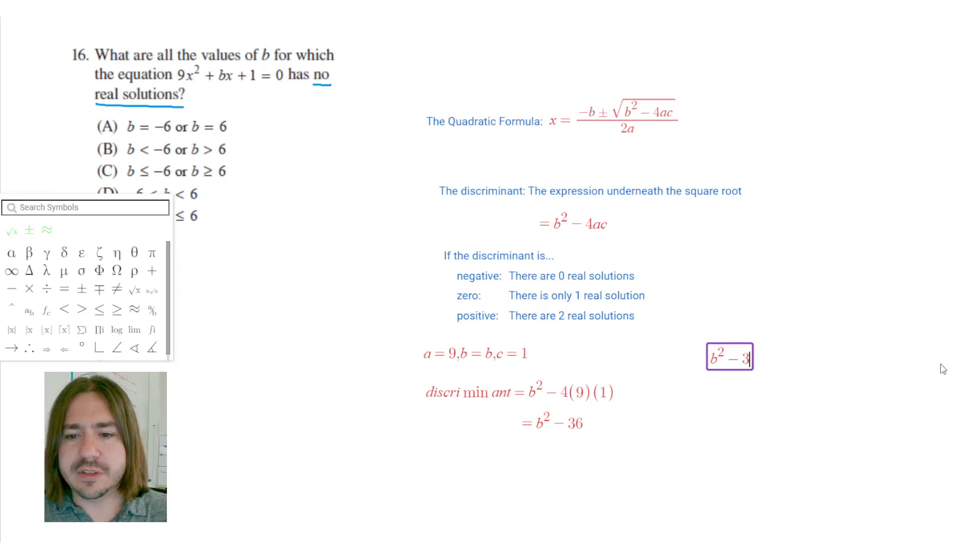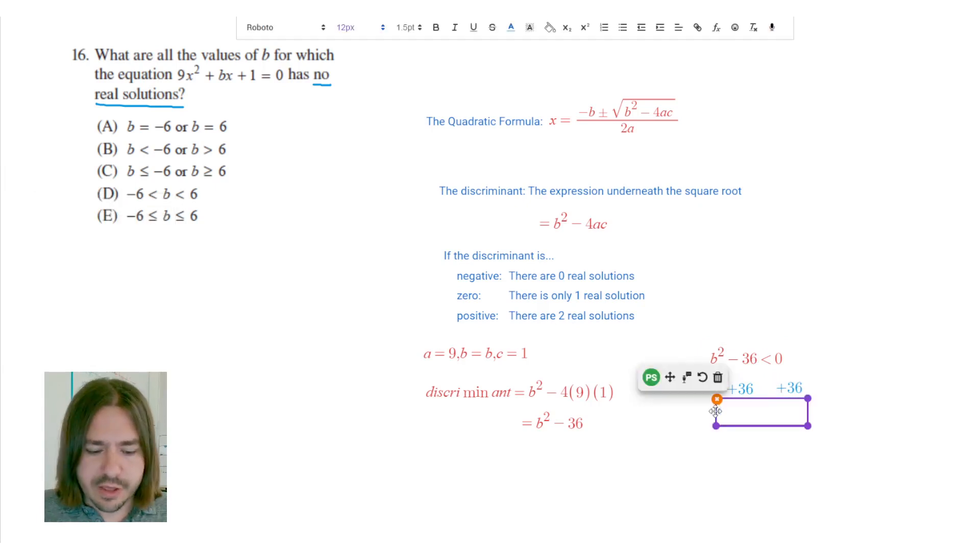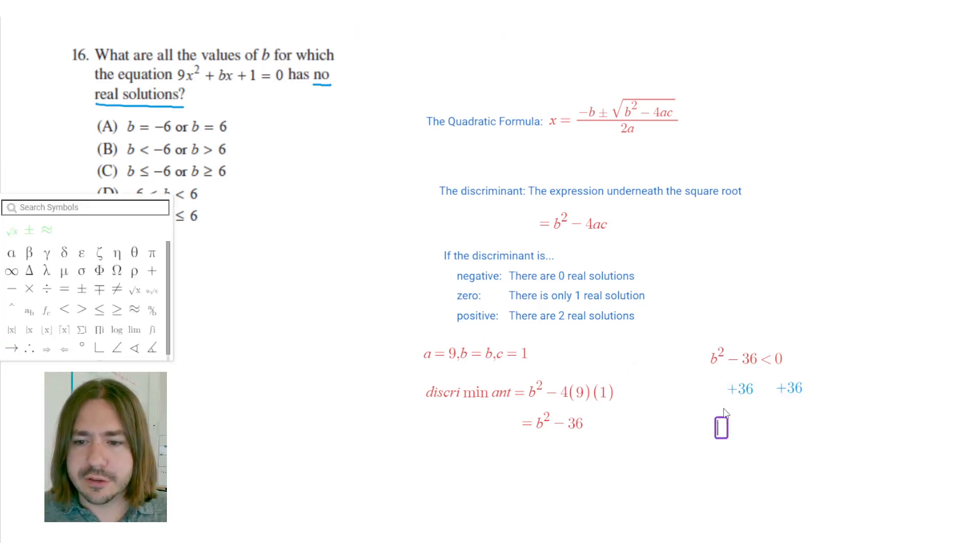b squared minus 36 is less than 0 because we want it to be negative. So we're solving this inequality. Now, if this is going to be less than 0, what we could do first is we could add 36 to both sides. And then we'd have b squared is less than 36.